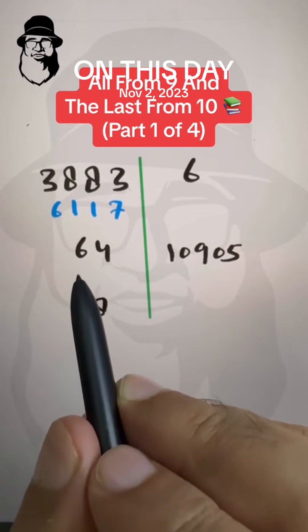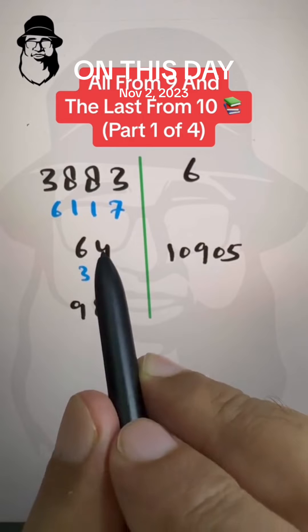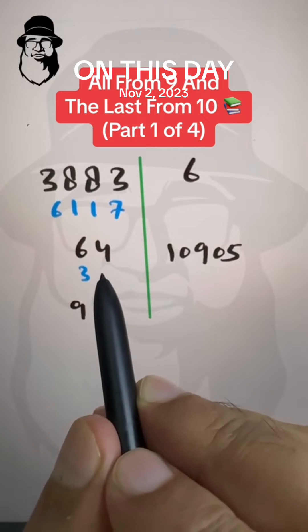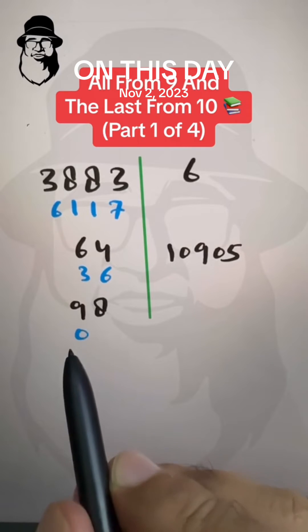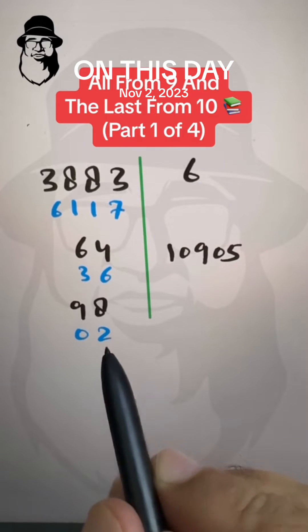Here, 6 from 9 is 3, and 4 from 10 is 6. Here, 9 from 9 is 0, and 8 from 10 is 2.